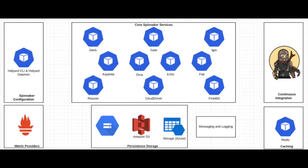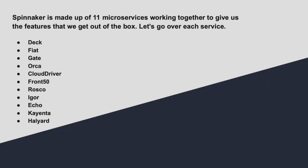Let's take a look at a diagram of the Spinnaker architecture. Spinnaker is made up of 11 microservices working together to give us the features that we get out of the box. Let's go over each service.